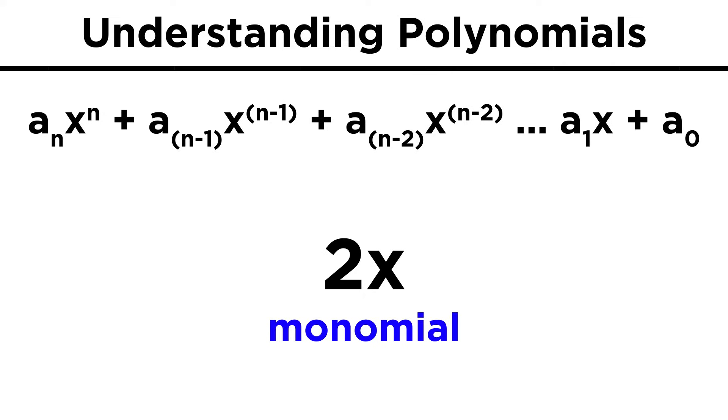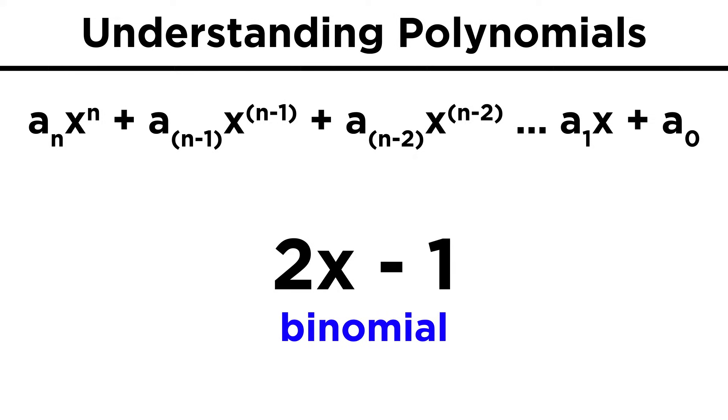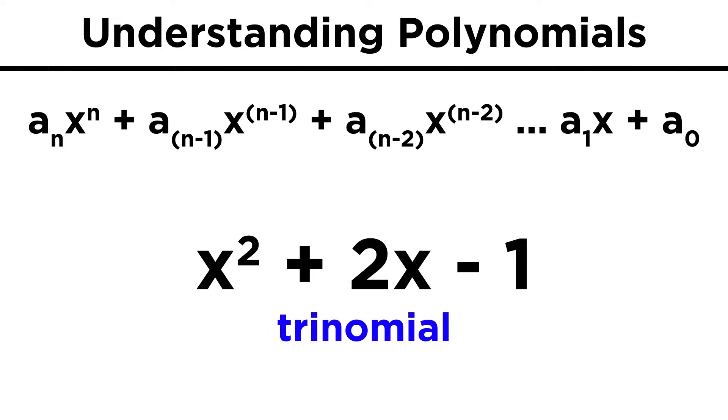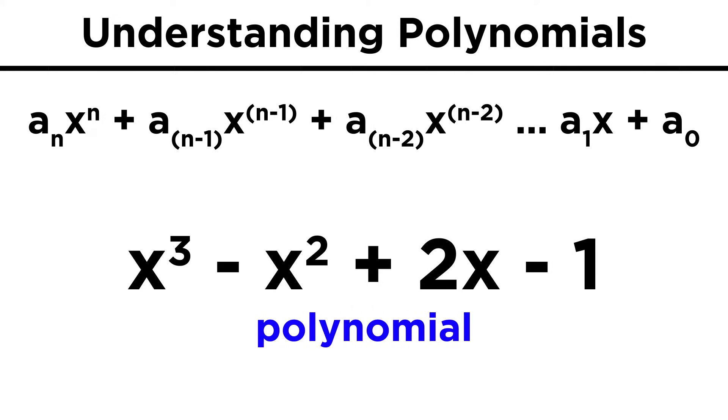If there is just one term like two x, it's a monomial. If there are two terms like two x minus one, it's a binomial. Three terms like x squared plus two x minus one would be a trinomial. Beyond this there are no special names, so we can generally just call all of these polynomials, whether there is one term or a hundred.